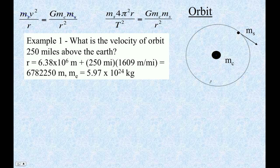Here's our first example: what is the velocity of orbit 250 miles above the Earth? Since we've got velocity here, there are two different centripetal forces - one with period and one with velocity. Since we're dealing with velocity for this one, we're going to use the velocity one.